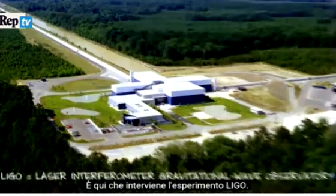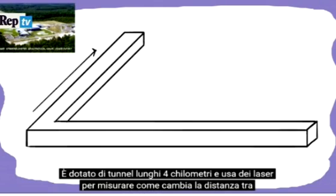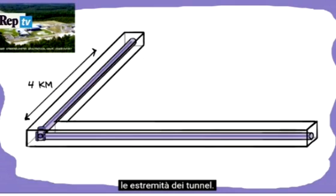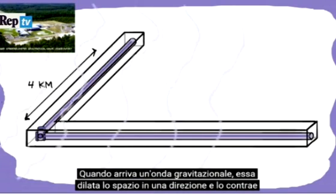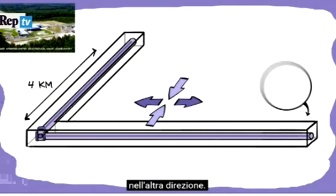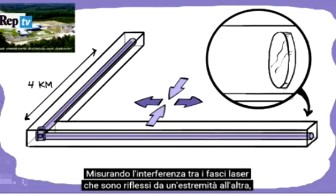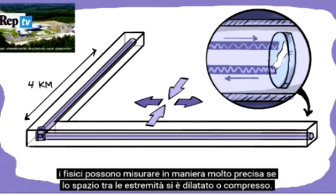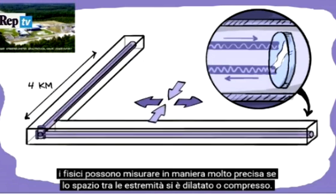This is where the LIGO experiment comes in. It has four kilometer long tunnels and uses lasers to measure the changes in the distance between the ends of the tunnels. When a gravitational wave comes through, it stretches space in one direction and squeezes space in the other direction. By measuring the interference of the lasers as they bounce between the different points, physicists can measure very precisely whether the space in between has stretched or compressed.